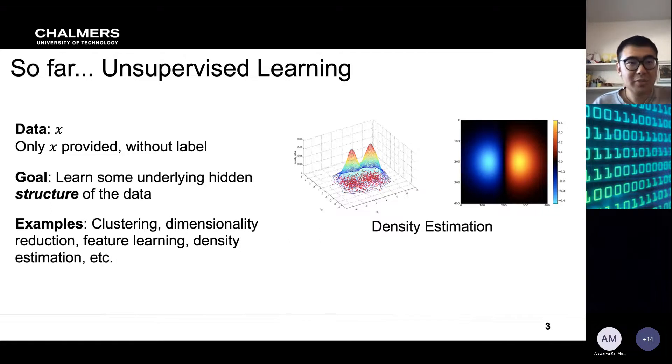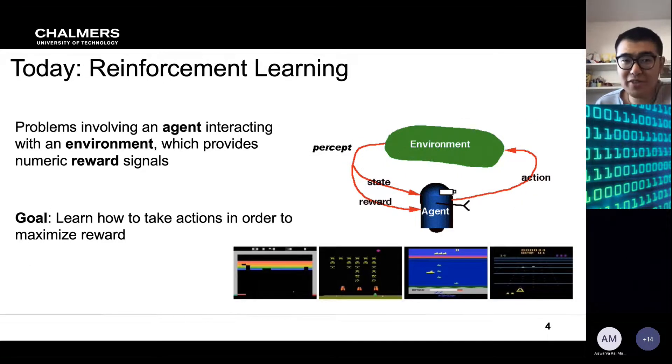But now today we have a new category which is called reinforcement learning. And the problem of reinforcement learning is involving the agent which interacts with the environment and that environment can provide numeric reward signals. And basically the goal of this method is to learn how to take actions in order to maximize the reward that can be obtained by the agent.